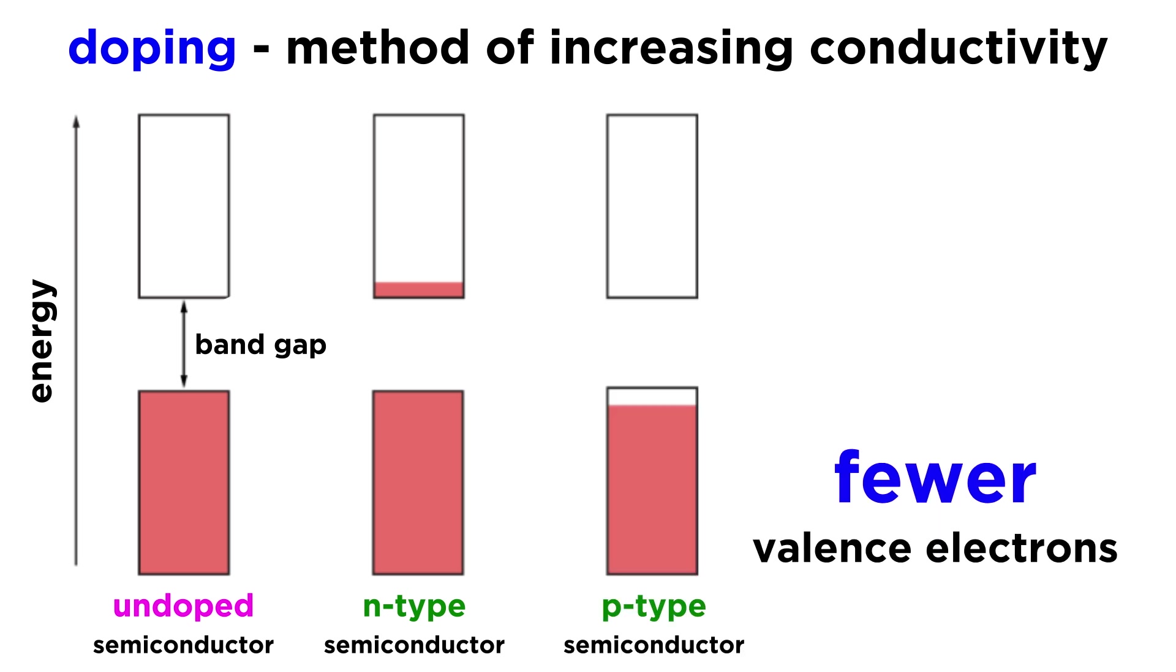If the dopant has fewer electrons, the valence band will end up not completely full and current will again be able to flow. This is called a P-type semiconductor, where P stands for positive.